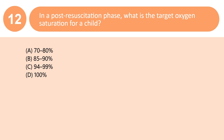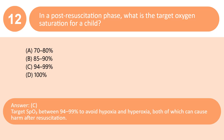In a post-resuscitation phase, what is the target oxygen saturation for a child? A. 70–80%. B. 85–90%. C. 94–99%. D. 100%. Answer: C. Target SpO2 between 94–99% to avoid hypoxia and hyperoxia, both of which can cause harm after resuscitation.